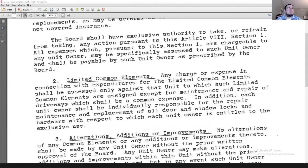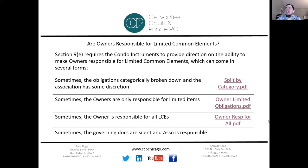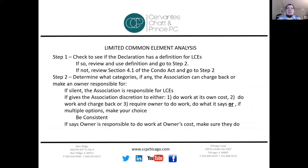Unfortunately, if we don't have those items or something similar, we are stuck with the association being responsible for the maintenance, repair, and replacement of the limited common elements. If they do not do it, the owners will hold them accountable. So here's our analysis: Step One — determine what we're talking about and whether it is a limited common element under the declaration, and if the declaration is silent, under section 4.1 of the Condominium Property Act. Step Two — determine what category that item fits into, whether it's a general limited common element or an exclusive limited common element.